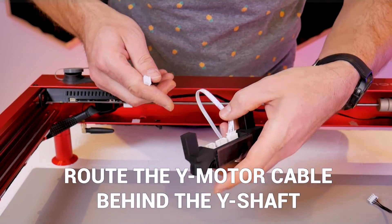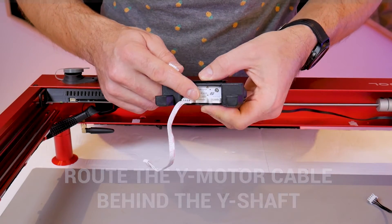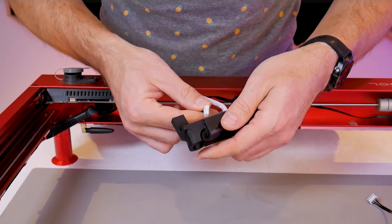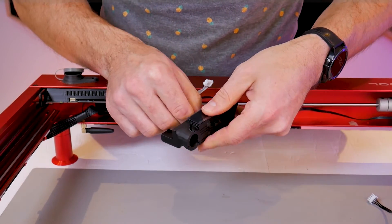Now we can take the Y motor cable that we just unplugged and connect that to the middle connector labeled 'to Y motor'.